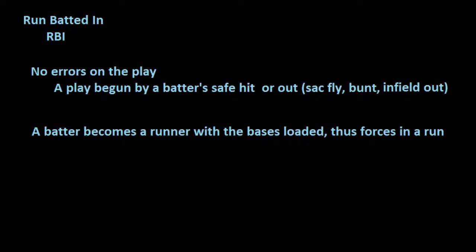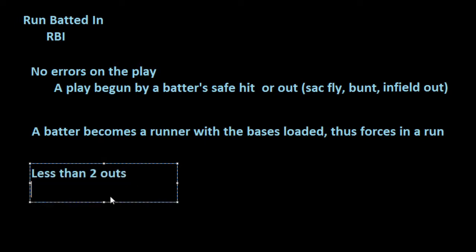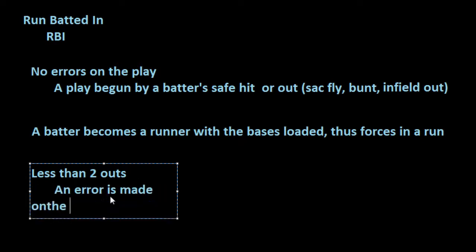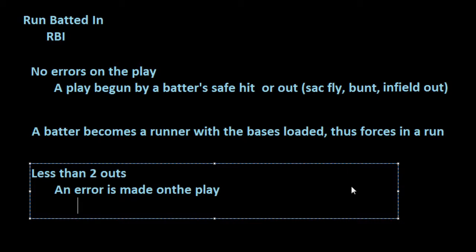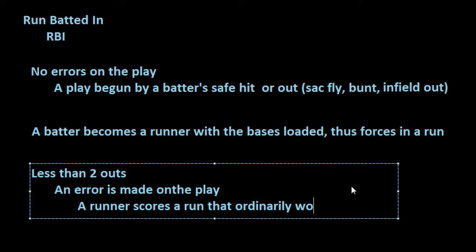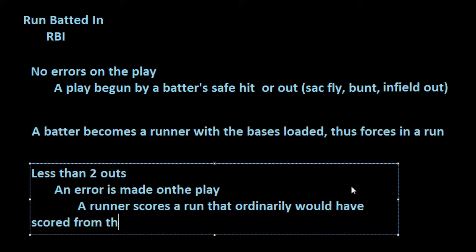Let's take a look at the third and final way that you can get credited with an RBI. For this situation, there must be less than two outs and an error is made on the play. A run is going to score, but it has to be a runner that would have ordinarily scored from third base.